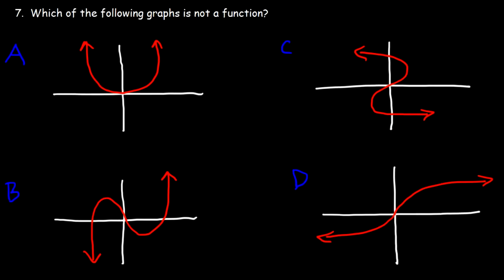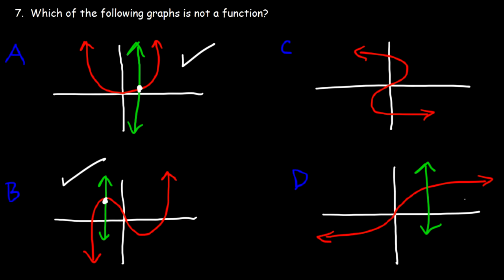Number 7: which of the following graphs is not a function? To find the answer, we need to see which one does not pass the vertical line test. Starting with A — if we draw a vertical line, it touches it only once, so A is a function. For B, it also touches the vertical line only once, so B is a function. D also passes the vertical line test. But C is not a function — if we draw a vertical line at that location, it touches the line three times. So the right answer is C.